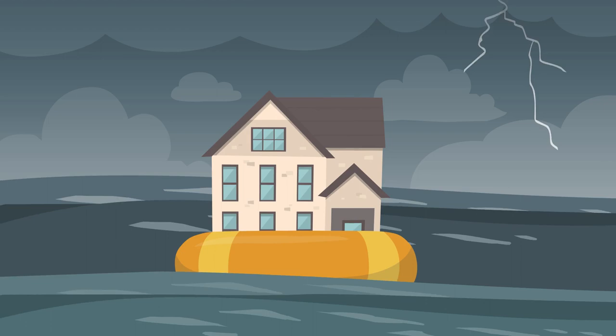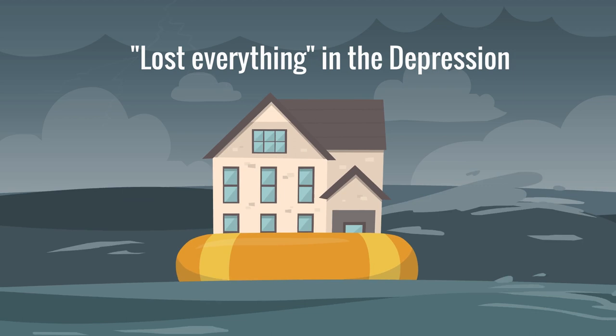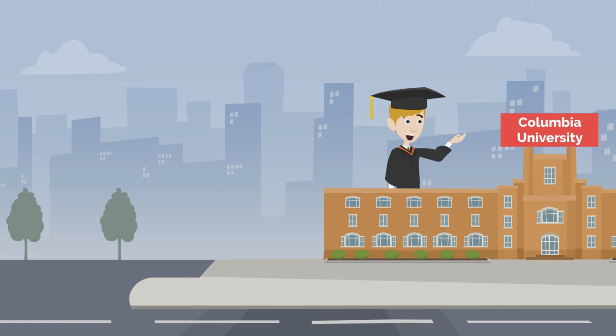He was born to immigrant parents. He had his formative experiences shaped by poverty. His businessman father lost everything in the Depression. But Arrow flourished at the school and received an MA in mathematics from Columbia University at the age of 19.